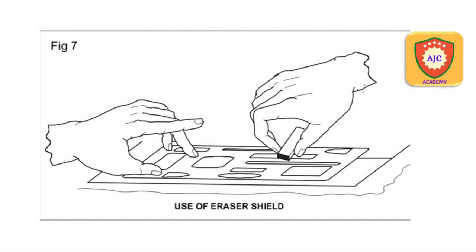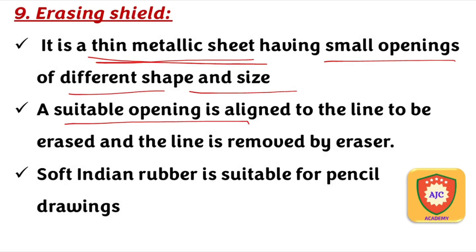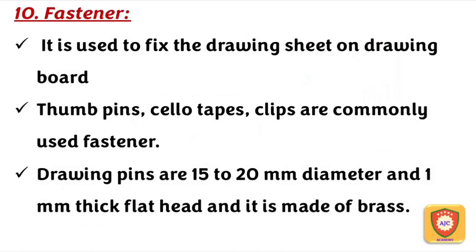The next equipment is the fasteners. We fix the drawing sheet and the drawing board using fasteners. Types include thumb pins, cello tape, and clips.